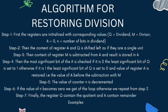Step 4: Then the most significant bit of A is checked. If it is 0, the least significant bit of Q is set to 1. Otherwise, if it is 1, the least significant bit of Q is set to 0. The value of register A is restored — that is, the value of A before the subtraction with M.